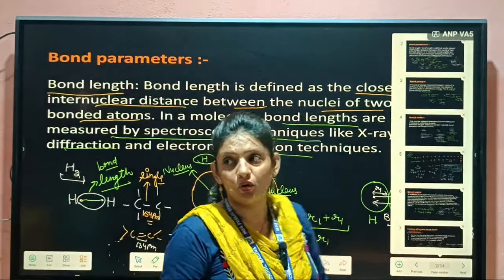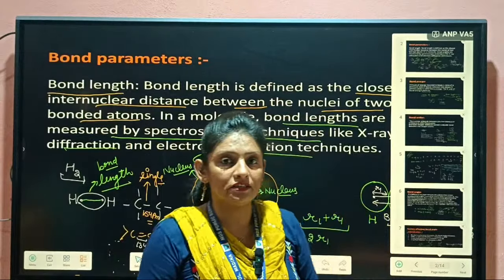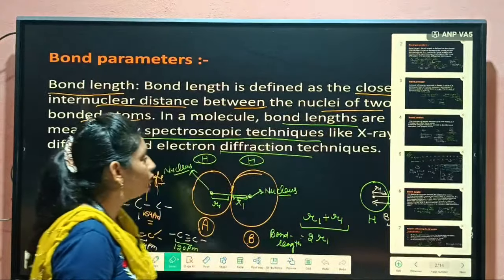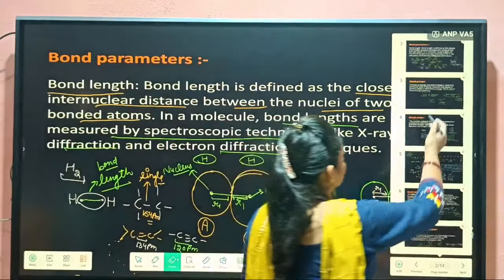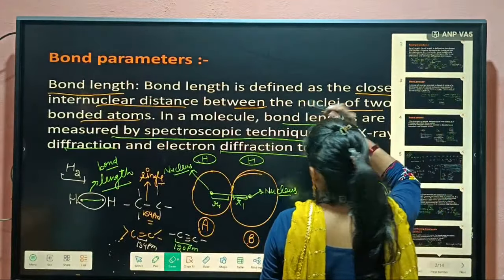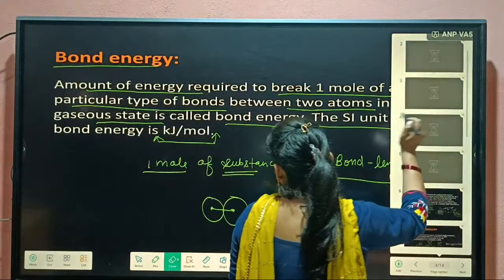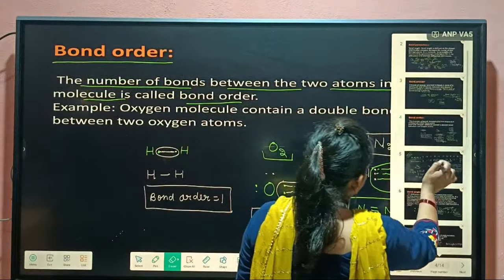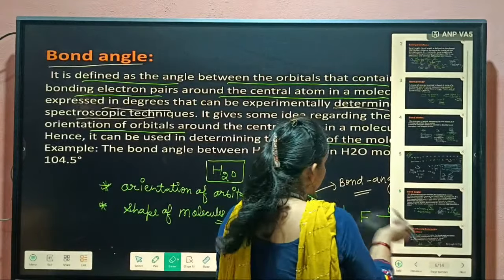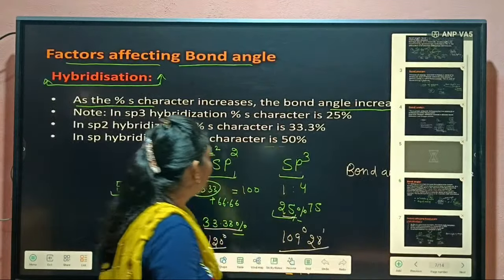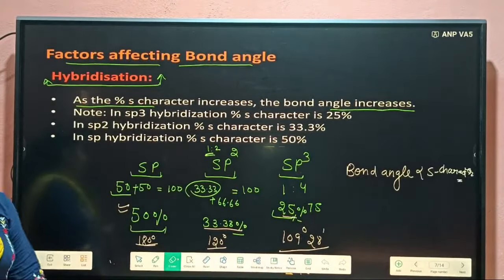Hello students, I hope you all are fine. As you know, yesterday we were discussing about the bond parameters. In bond parameters, we have seen what is bond length, bond energy, bond order, and bond angle. Then we were discussing about the factors affecting the bond angle.